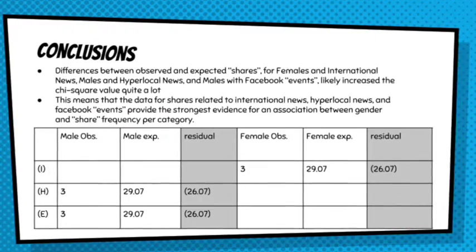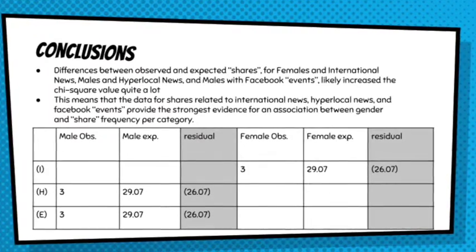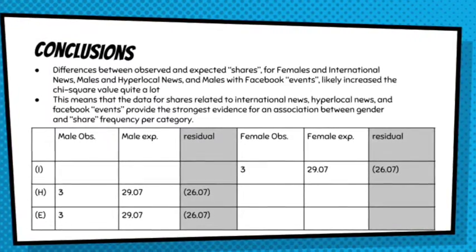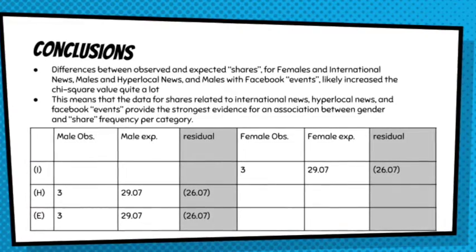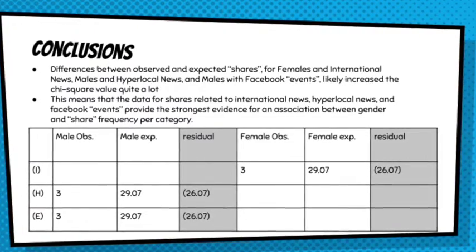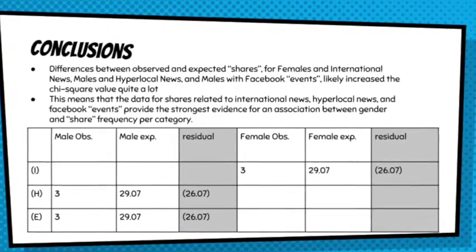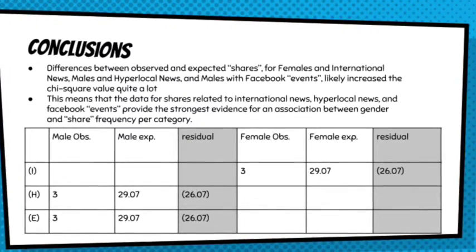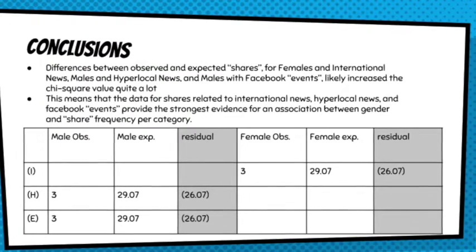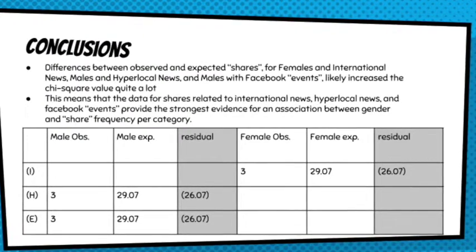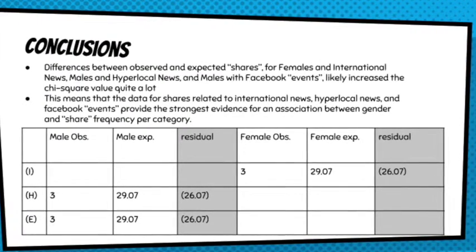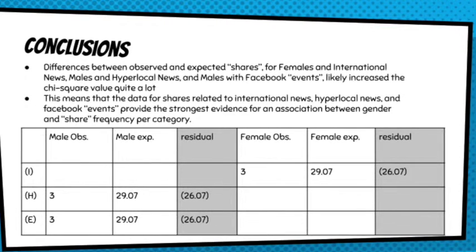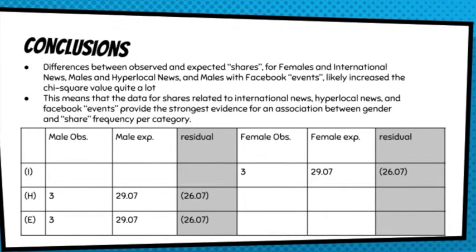These were the statistics that contributed most to the chi-square statistic overall. Men seemed to post less hyperlocal news — which is like neighborhood news — and they posted a lot fewer Facebook events than expected. Women posted a lot fewer international articles than expected. Overall, I observed a lot less international or national articles than I personally expected, especially because I conducted this study leading up to the 2017 inauguration.